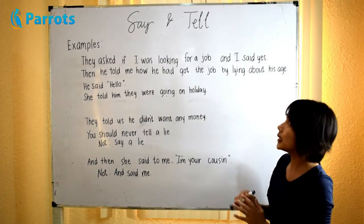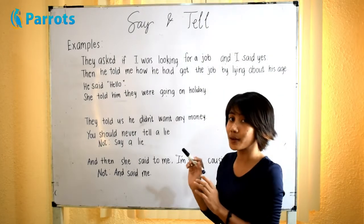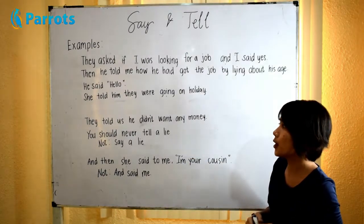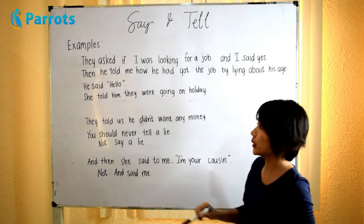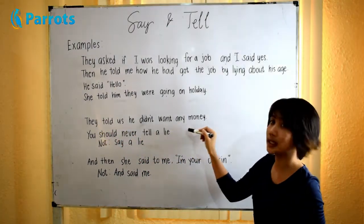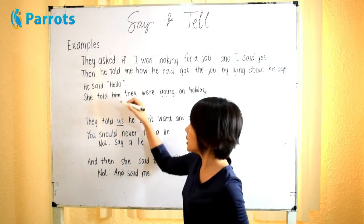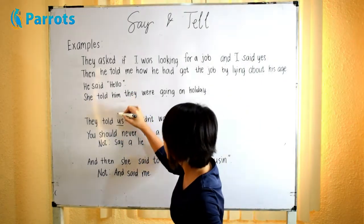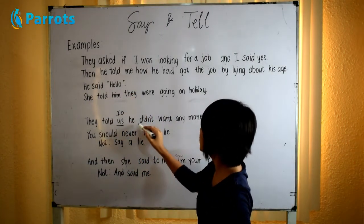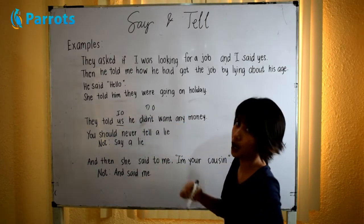Normally, tell takes both an indirect and a direct object in a sentence. For example, they told us he didn't want any money. Here, us is the indirect object, and he didn't want any money is the direct object.